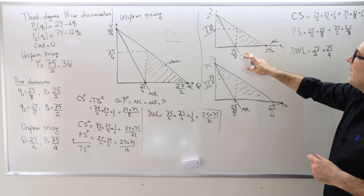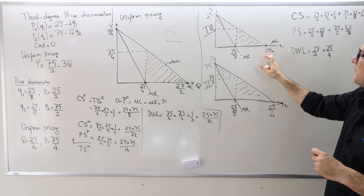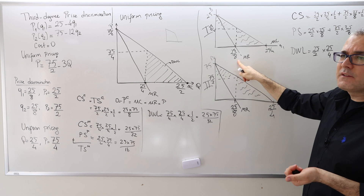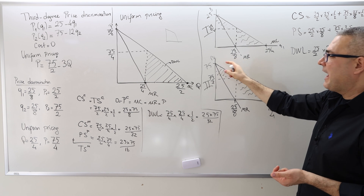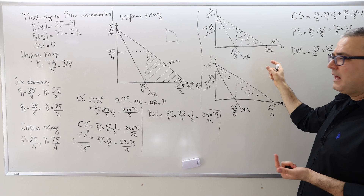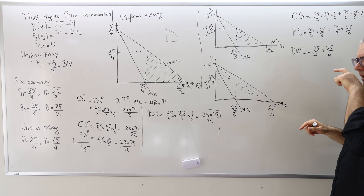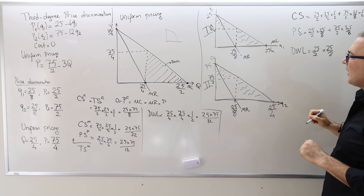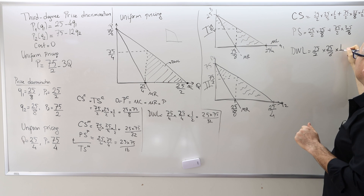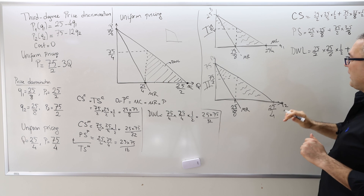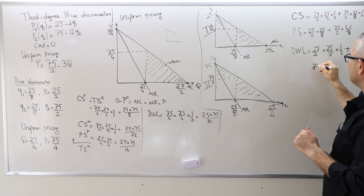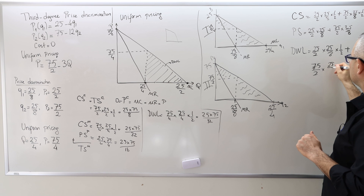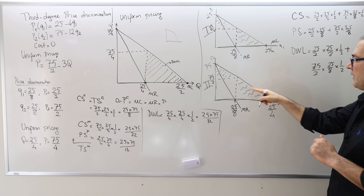The deadweight loss triangles are: for group 1, height = 25/2, base = 25/4 − 25/8 = 25/8, times 1/2. For group 2, height = 75/2, base = 25/8, times 1/2. So the total deadweight loss under third-degree price discrimination is the sum of these two triangle areas.